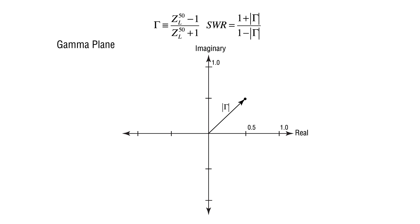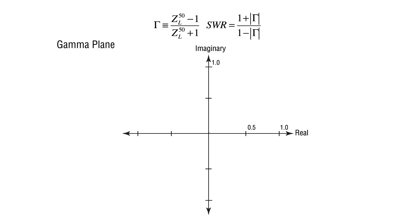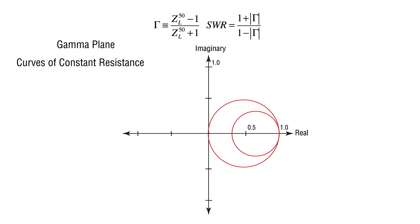Let's look at the gamma plane, showing a value of gamma with its real part plotted along the horizontal axis and its imaginary part plotted along the vertical axis. This is the most we'll need to know about complex number arithmetic. If one uses the definition of impedance as resistance and reactance, it turns out that the plots of constant resistances are a series of circles whose diameter is related to the resistance value.